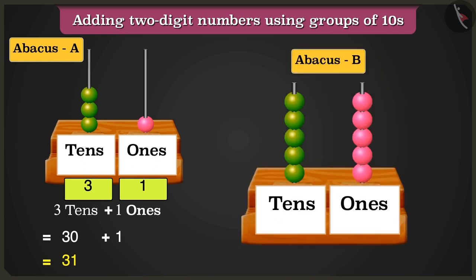Look, here in abacus B, the 10s box has 1, 2, 3, 4 and 5 beads. And the 1s box has 1, 2, 3, 4 and 5 beads.